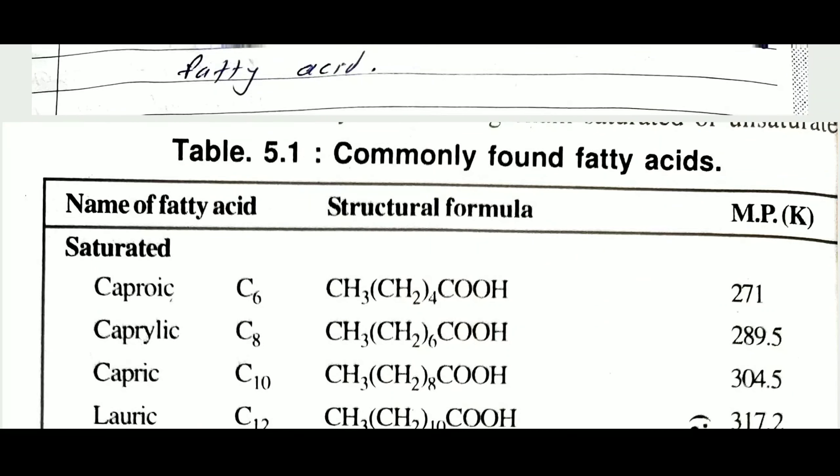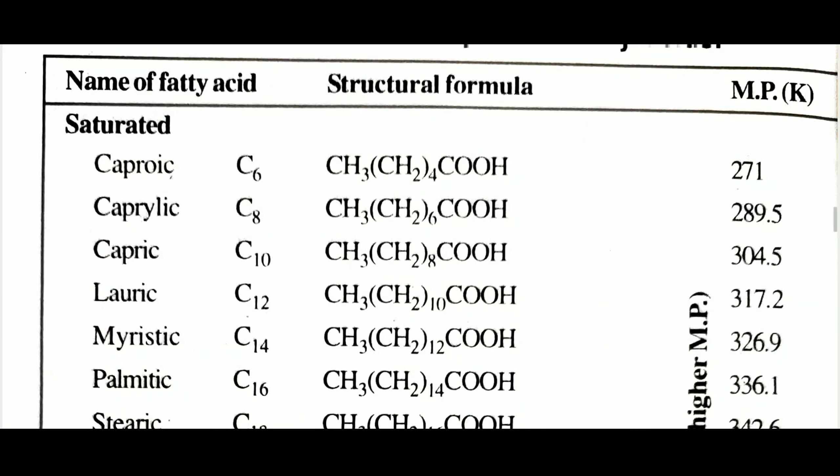There are saturated fatty acids and unsaturated fatty acids. Fatty acids have more than four carbon atoms in their structure. The first saturated fatty acid is caproic acid, containing 6 carbon atoms with a melting point of 271 K. Caprylic acid contains 8 carbon atoms with a melting point of 289.5 K. Capric acid contains 10 carbon atoms with a melting point of 304.5 K. Lauric acid contains 12 carbon atoms with a melting point of 370.2 K.